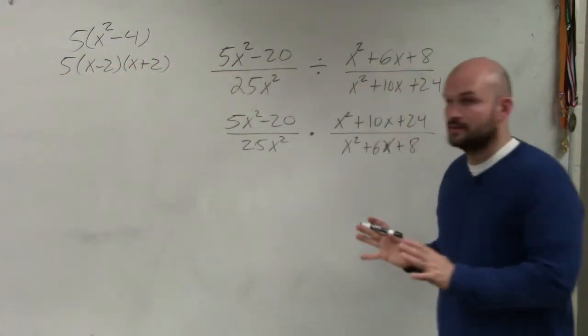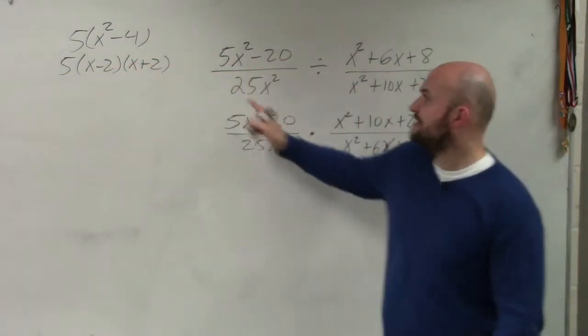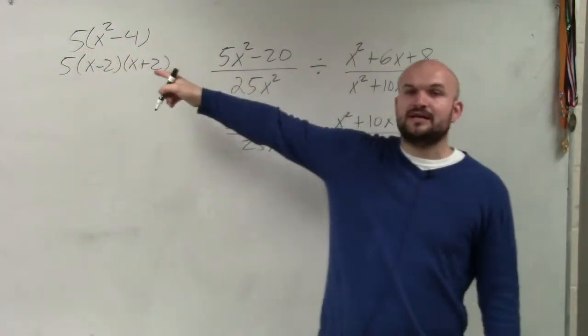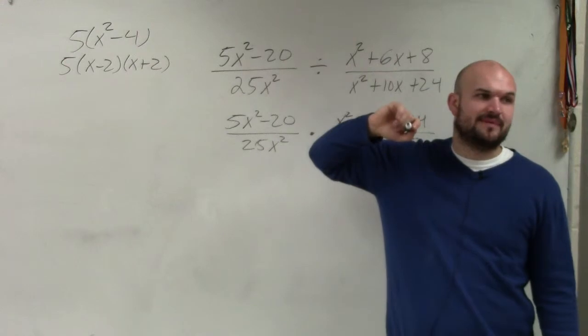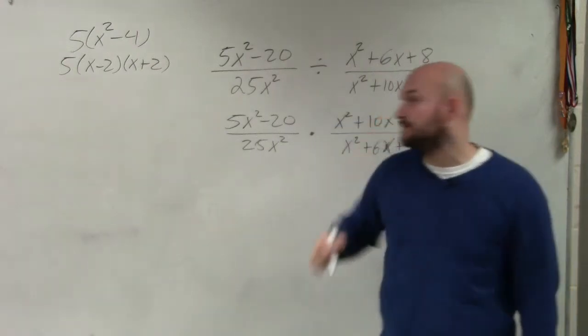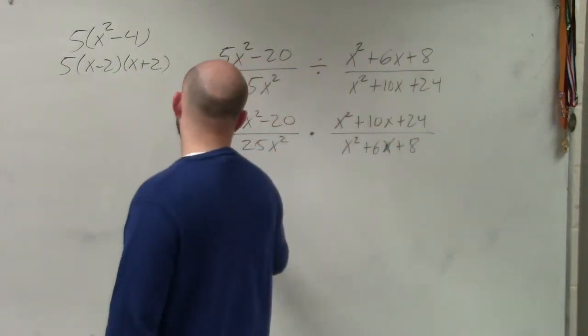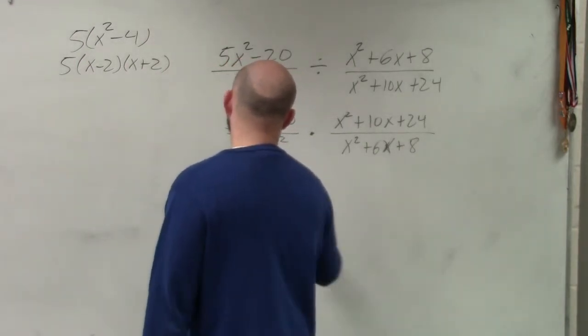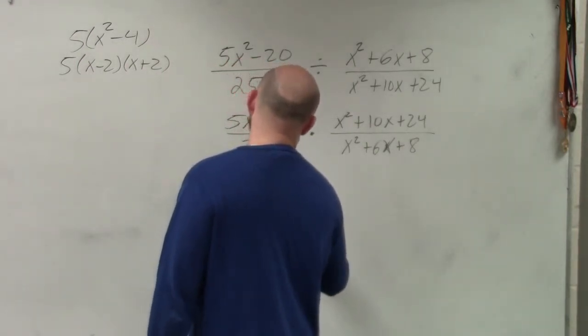I factor out a 5, I'm left with 5 times x² - 4. Then I can factor the x² - 4 as (x + 2)(x - 2). So therefore, I factor this to 5(x - 2)(x + 2) divided by 25x².